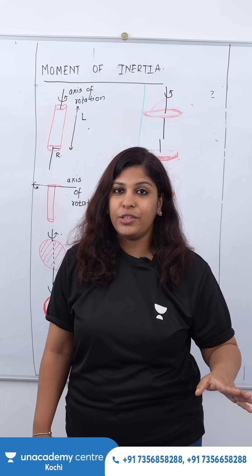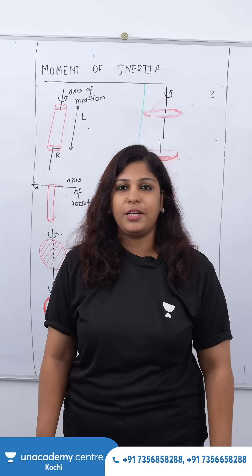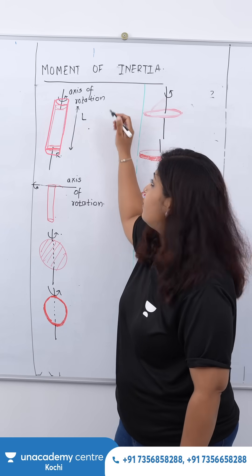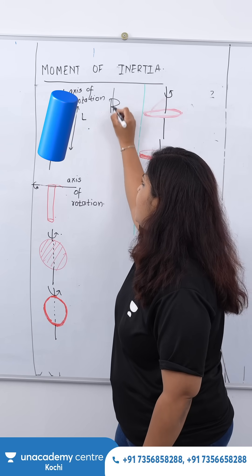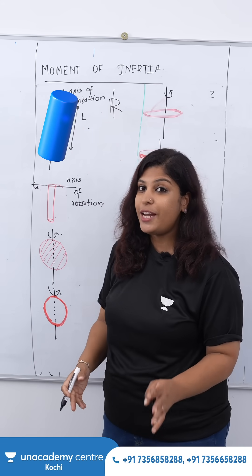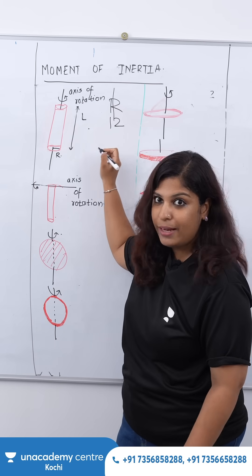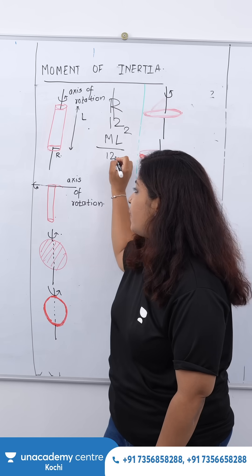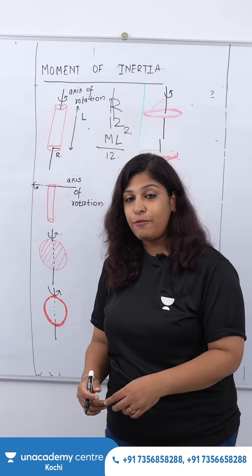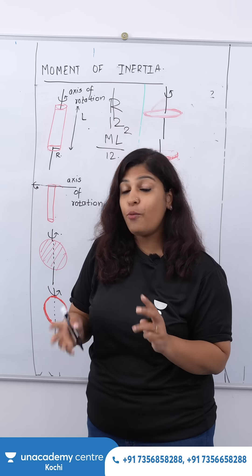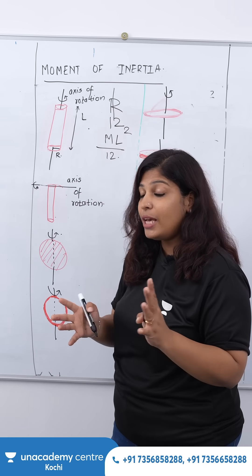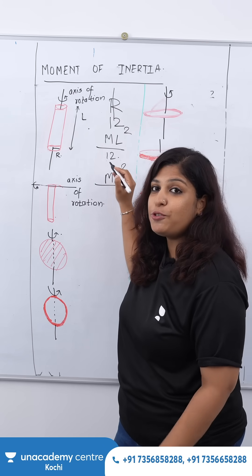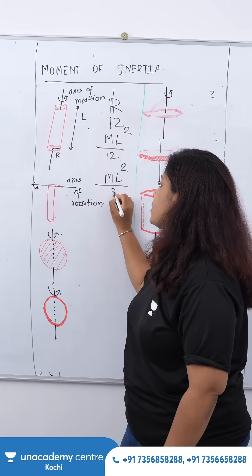Let's get started. This is the rod. If I write it and divide it, what will you get? You will get 12, right? So the moment of inertia is ml² / 12. Then for the axis of rotation through one end: ml² — add 1 plus 2, you get 3 — so ml² / 3.